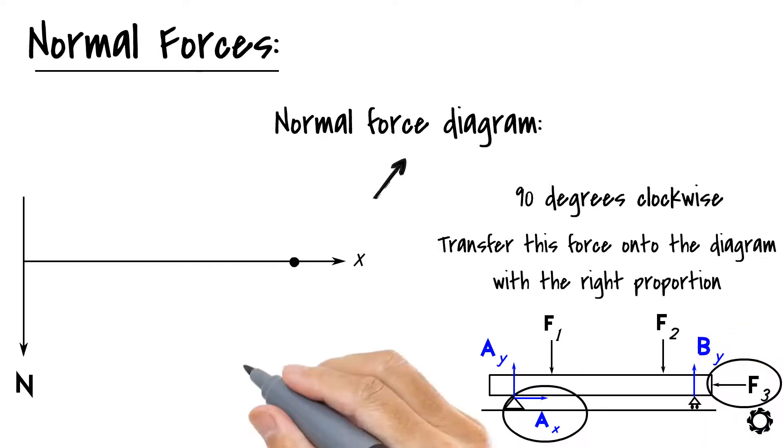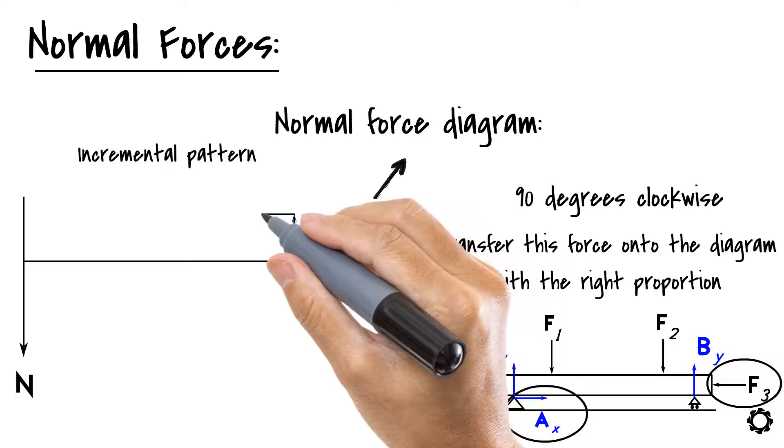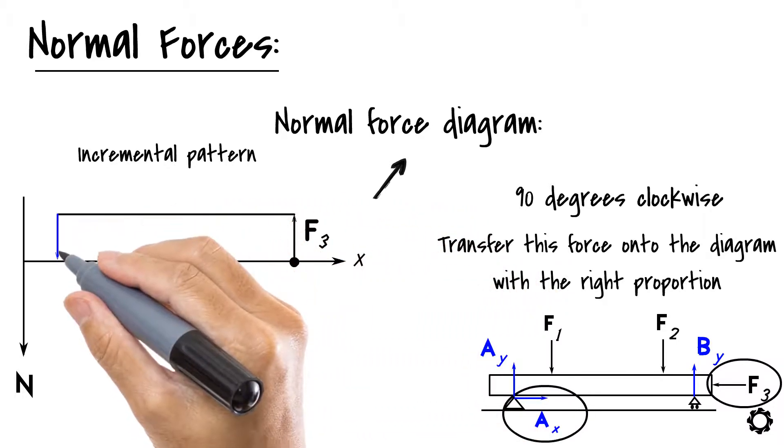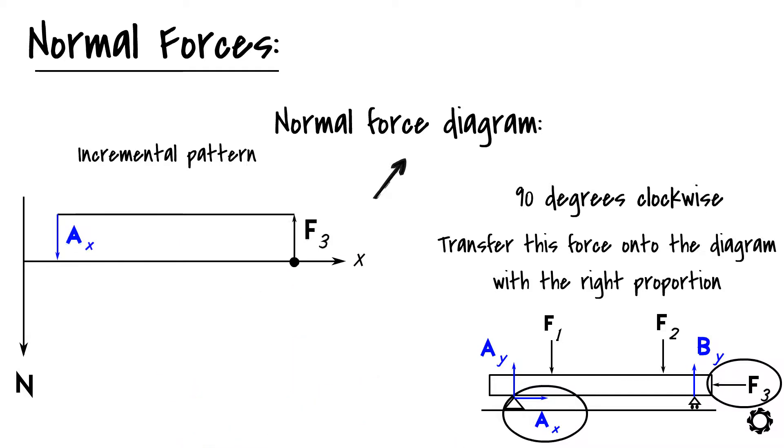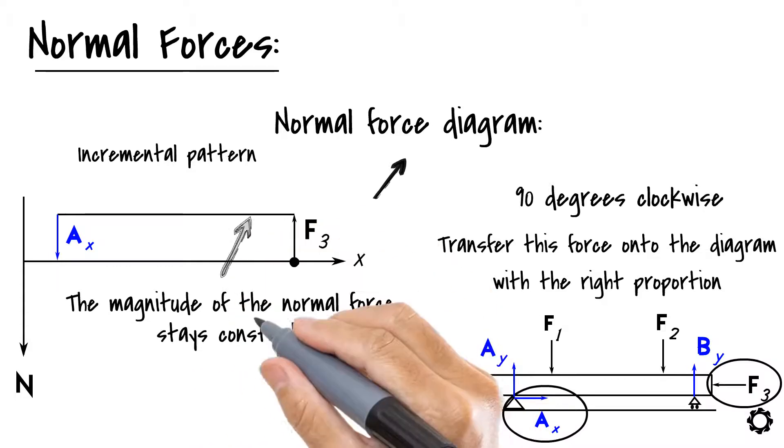By doing this, you will get an incremental pattern in which for every point there is a horizontal force and there is also a jump whose value is the same as the corresponding force. You may also notice that the magnitude of the normal force in the diagram stays constant between two different horizontal forces.